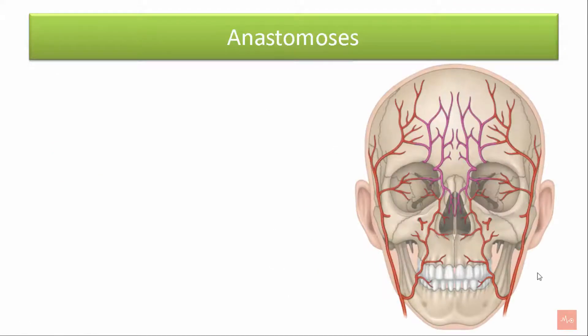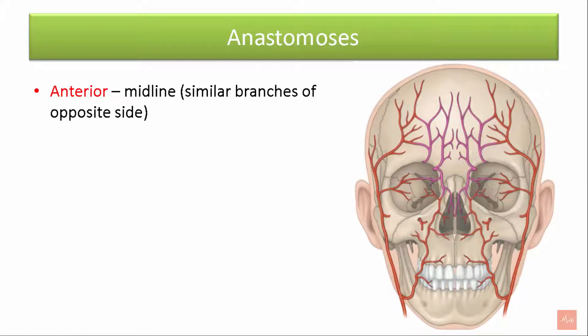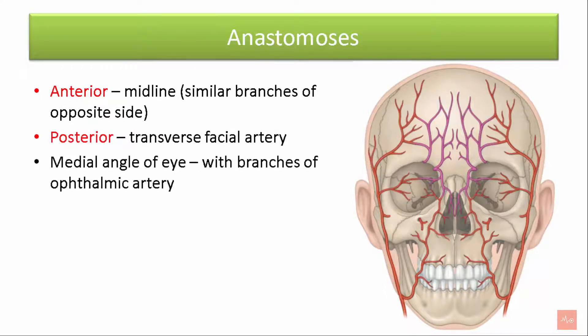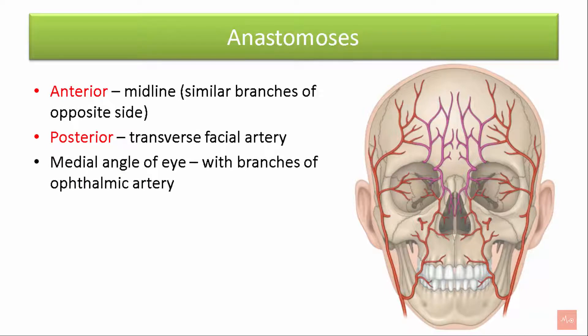The facial artery forms anastomosis anteriorly at the midline with similar branches of the opposite side. Posteriorly it forms anastomosis with the branches of the transverse facial artery. And along the medial angle of the eye it forms anastomosis with the ophthalmic artery.